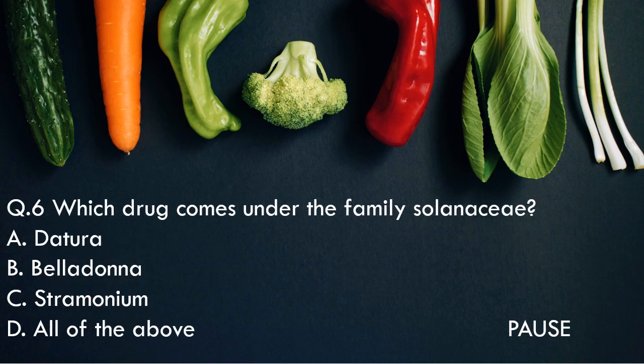Question 6: Which drug comes under the family Solanaceae? Option A, Datura. Option B, Belladonna. Option C, Stramonium. Option D, all of the above. And the right answer is option D, all of the above. Datura, Belladonna, and Stramonium drugs come under the family Solanaceae.